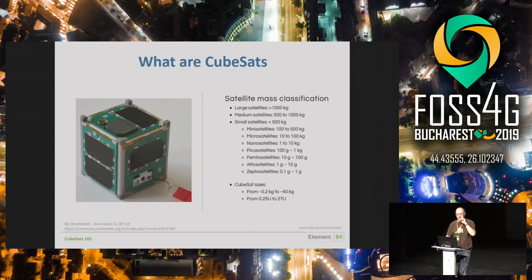CubeSats fall in the nanosatellite range — satellites of about one kilogram to ten kilograms, with most being around two to three kilograms. That size can have an impact on the lifespan and the exact orbit of the CubeSat.